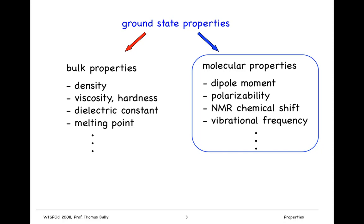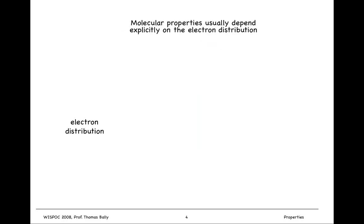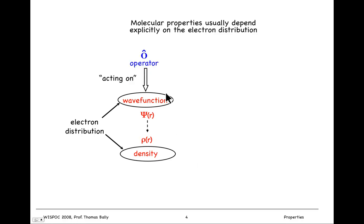I'm going to focus this talk almost exclusively on molecular properties, and molecular properties usually depend explicitly on the electronic distribution. The wave function is important, and the electron density which derives from the wave function is important. One way to get at a property is to have an operator act on a wave function, and out comes a property. Thomas usually gives me credit for the oracle comment that a wave function is an oracle: you ask it a question, it gives you an answer.